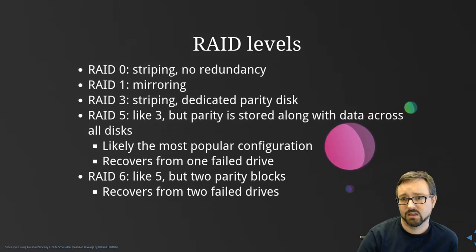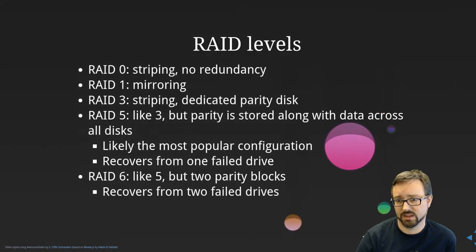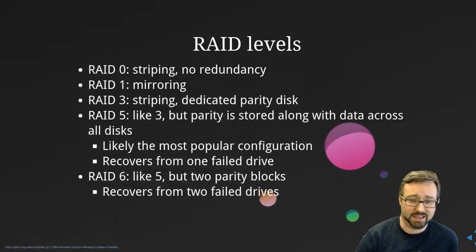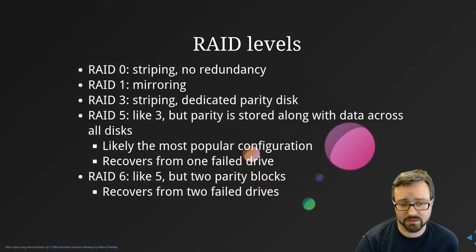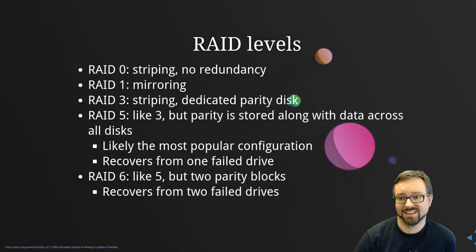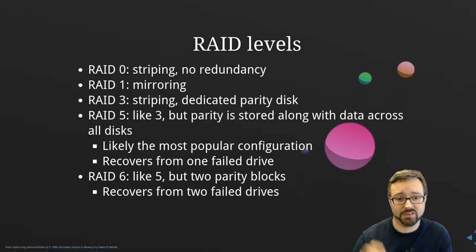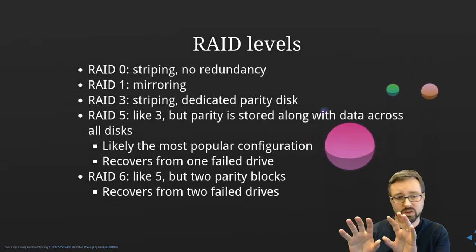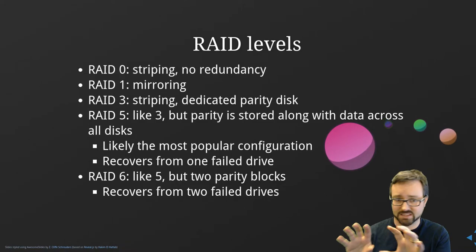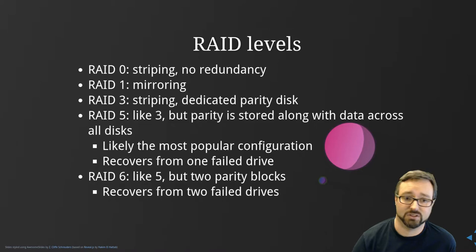RAID 0 uses striping but has no redundancy — it just makes things faster. If one disk dies in a RAID 0 array, you lose everything, so it's probably a bad idea since disks do fail. RAID 1 is just mirroring: typically two hard drives where, as you write to one, it writes to the other simultaneously. You end up with two copies of everything, so if one hard drive fails you still have all your data.